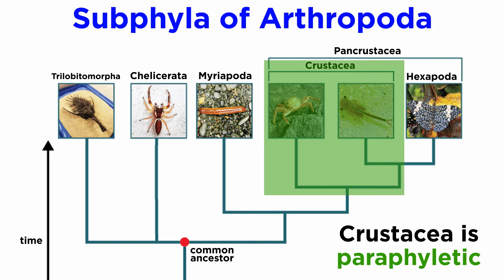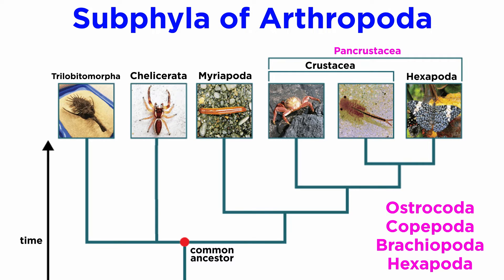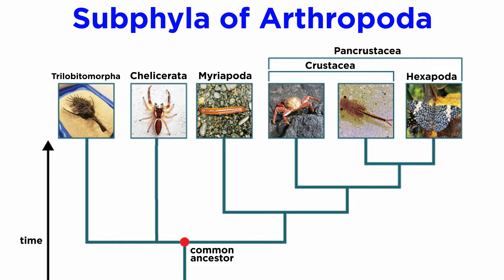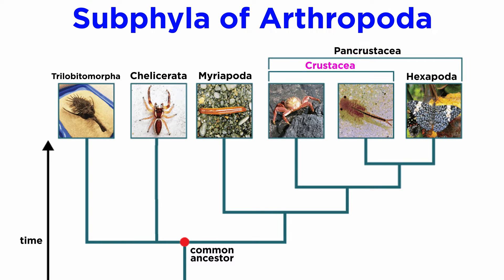Subphylum Crustacea is actually paraphyletic according to more recent studies, and Hexapoda is actually nested within Crustacea, so that the two form a clade known as Pancrustacea, which should be split into the clades Ostracoda, Copepoda, Brachiopoda, and Hexapoda. In this series, we will recognize Mandibulata and Pancrustacea, while also using the common term crustacean to refer to all pancrustaceans except for Hexapoda, keeping a bit more with the traditional classification for ease of understanding.